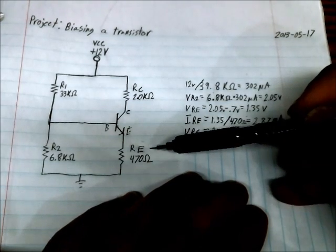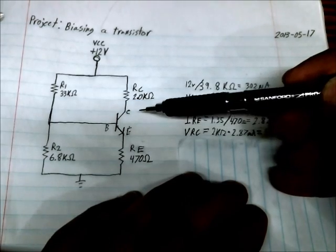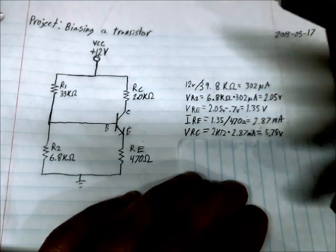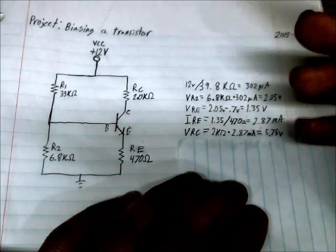Now that you have the voltage across RE and the voltage across RC you can calculate the voltage across the collector and the emitter of the transistor. So all you do is you take 12 and you subtract the voltage here and the voltage here.